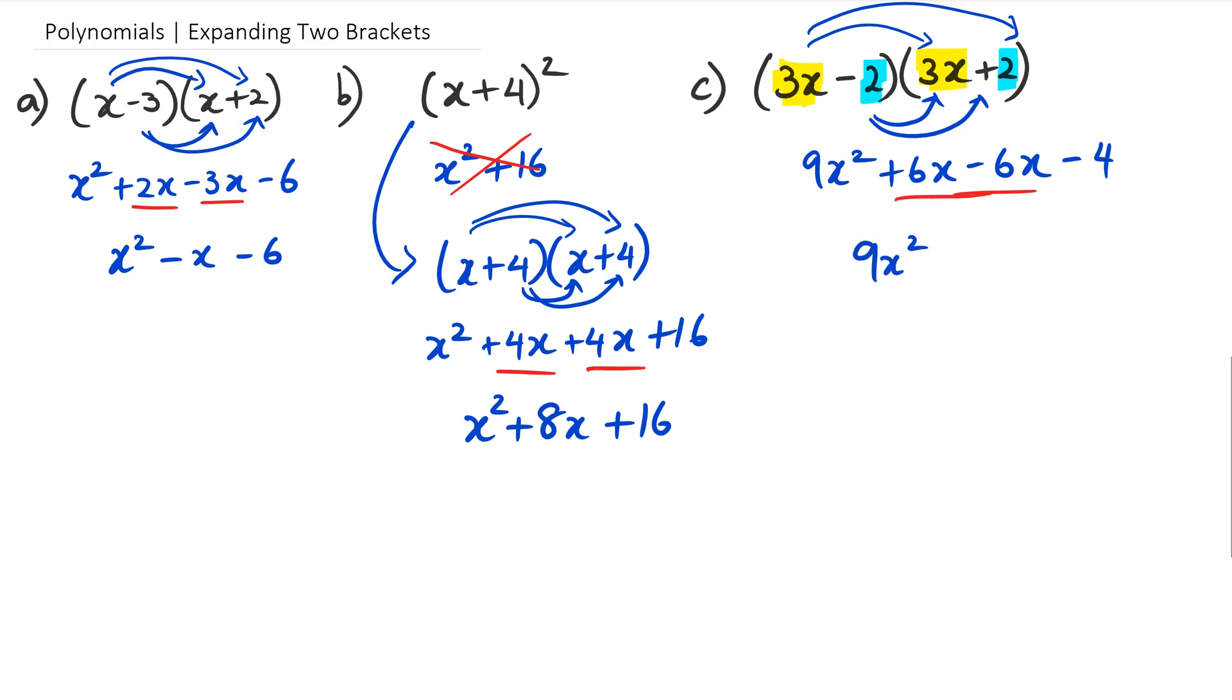So what you could have actually done is because if you look at the two parts that I've highlighted at the first line, you've got 3x times 3x which is equal to 9x squared, and likewise when you have negative 2 multiplied by positive 2, you're actually going to get negative 4. So you could potentially just go from this to this line here straight away without having to actually do all of that working out.